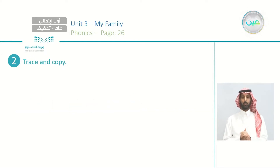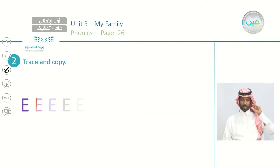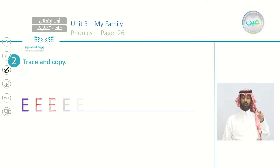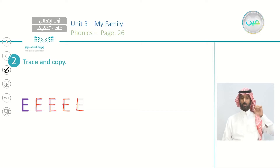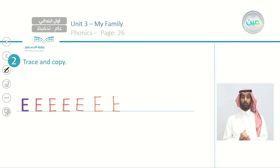What after D? We have the letter E. So we have A, B, C, D, E. Let's trace: one line, one, two, three lines on the right side. Again: one long line, three small lines on the right side. Let's trace: one, two, three. Now let's write: one big line, one, two, three short lines on the right side.